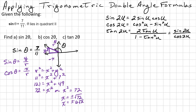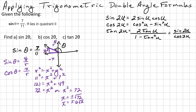Since we are in the second quadrant, x is negative. Therefore, cosine of theta equals negative 6 square root of 2 over 11. The negative sign can be placed out in front — either way they are the same thing.